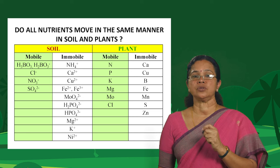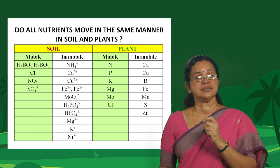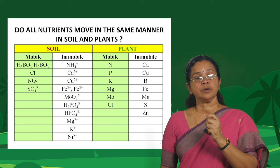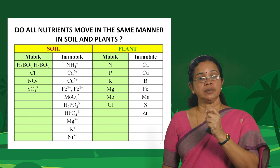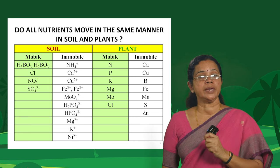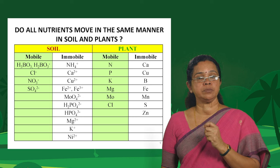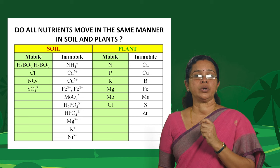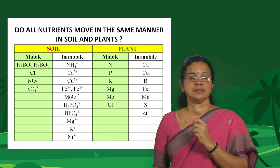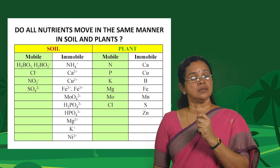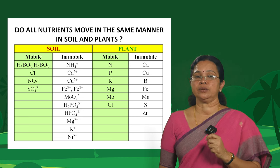In plants also, some nutrients are immobile. The immobile nutrients in plants include calcium, copper, boron, iron, manganese, sulphur and zinc — these are all immobile nutrients within the plant.